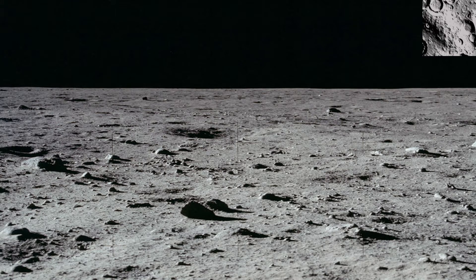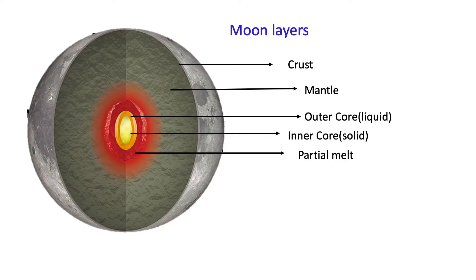The surface of the moon is made up of rocks and dust. The outermost layer of the moon is called the crust, which extends down to a depth of 50 kilometers. The crust of the moon is composed mostly of oxygen, silicon, magnesium, iron, calcium, and aluminum. There are also trace elements like titanium, uranium, thorium, potassium, and hydrogen.